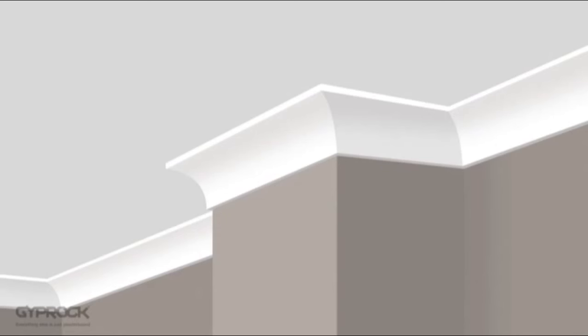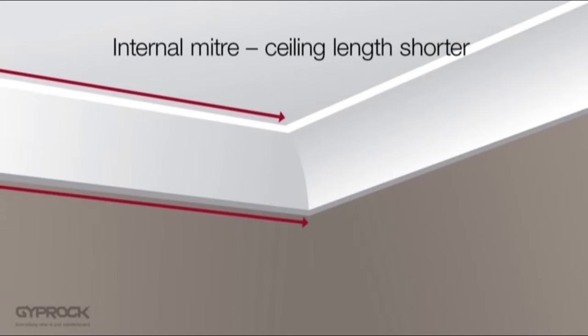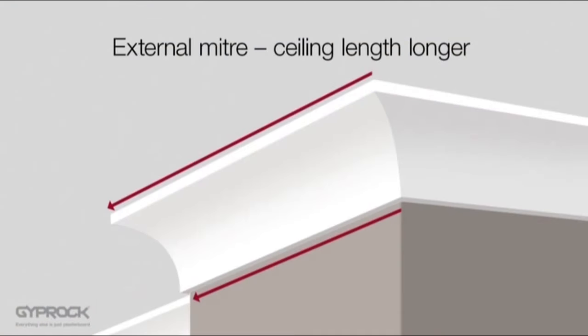There are some differences in cutting internal and external mitres that you need to be careful of. With internal mitres the edge of the cornice along the ceiling is shorter than the edge along the wall. For external mitres it's the ceiling edge length that's longer.